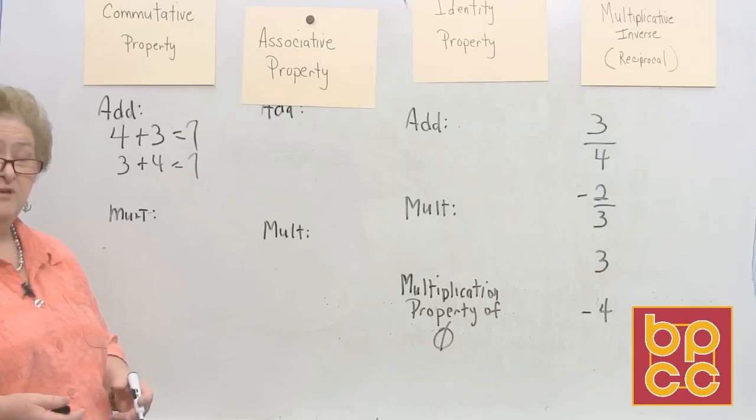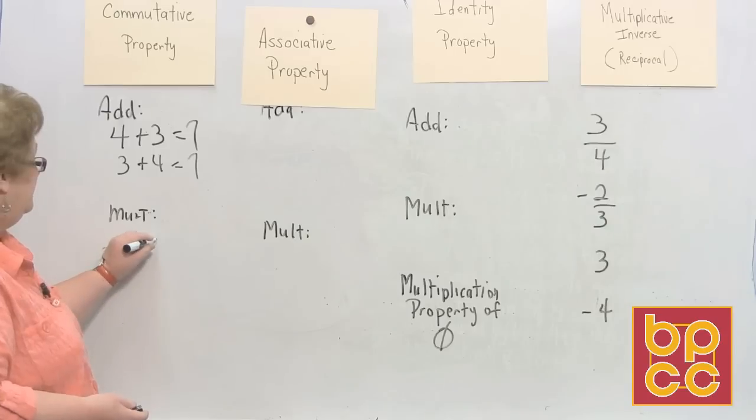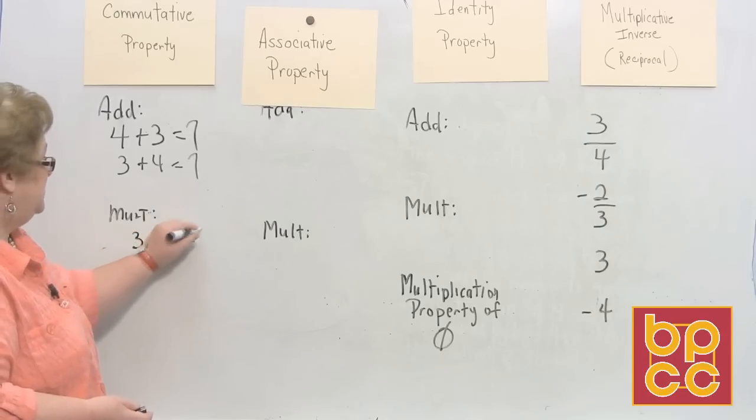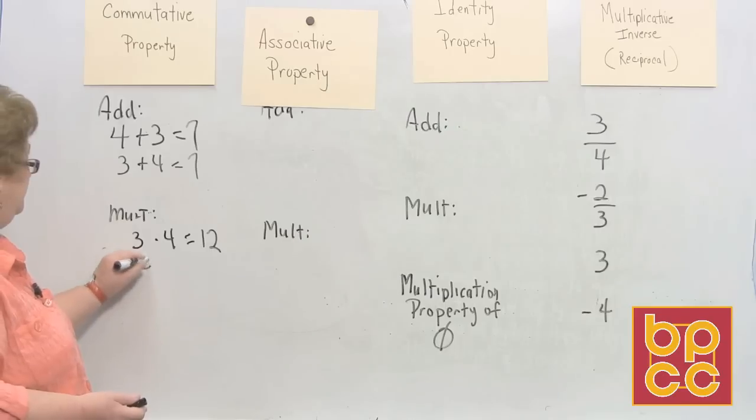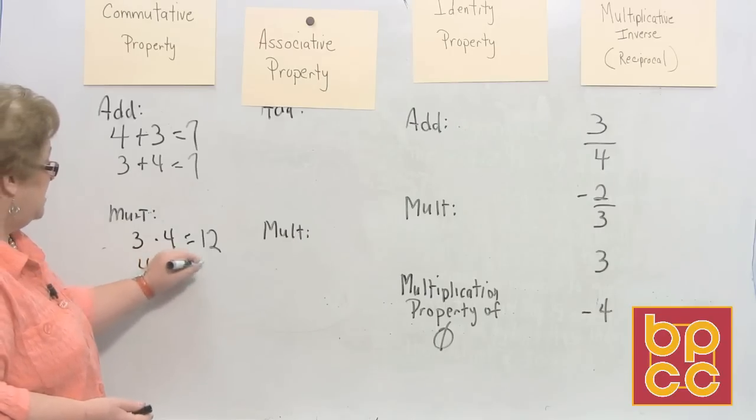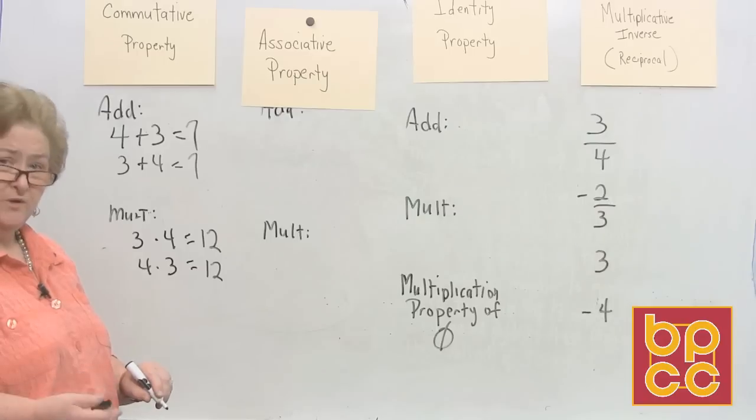So the commutative property for multiplication would be the same. If I have 3 times 4 is equal to 12, then 4 times 3 is also equal to 12. So commutative simply means switching places.